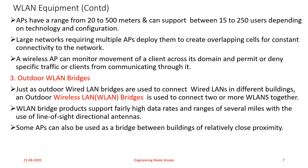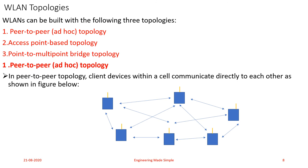Some access points can also be used as a bridge between buildings of relatively close proximity. So if you want to connect two wireless LANs that are not far from each other or are in close proximity, you can make use of an access point. In some cases, outdoor wireless LAN bridges are not required — if two buildings need to communicate with each other and are in close proximity, an access point can also act as a bridge.